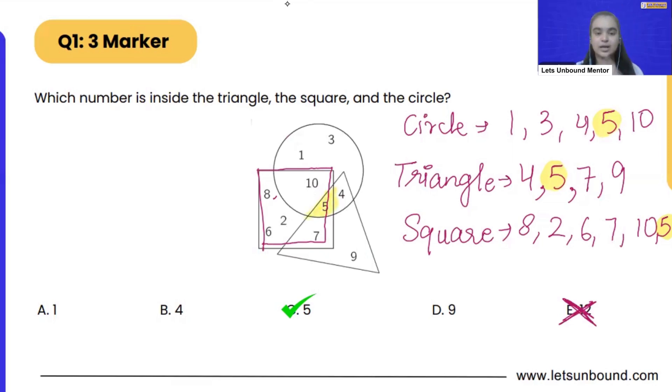So we learn two ways. Either you can list down all the numbers in all three shapes or what you can do is we can also start from the options. Option A, option B, then option C, then option D. So any which way which is easy for you, you can apply that and you can solve this question.